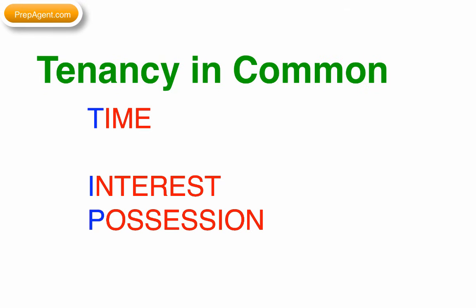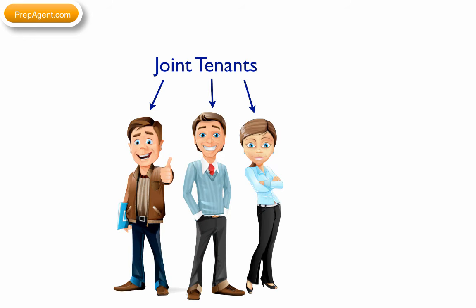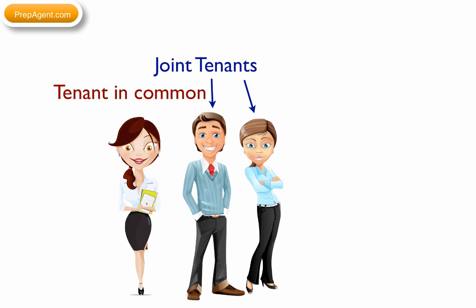Therefore, a person who buys interest as a joint tenant would be a tenant in common with the other joint owners if one of those essential elements is not there. For example, Stephen, Juan, and Carol purchase a home in the hills and they take title as joint tenants. Stephen gets transferred to another state and sells his property to Angie. Juan and Carol are still joint tenants, and Angie is now a tenant in common.